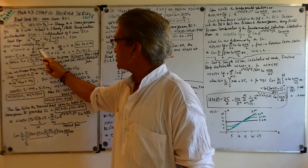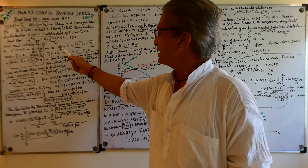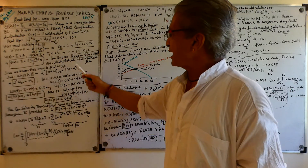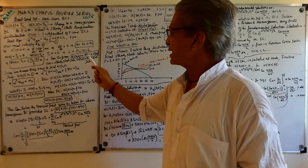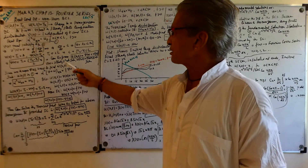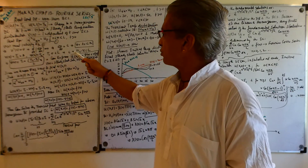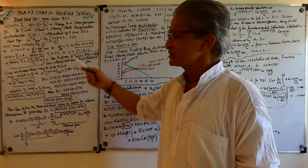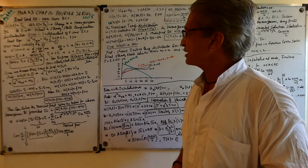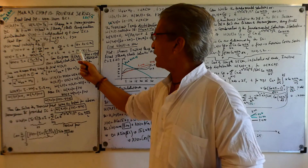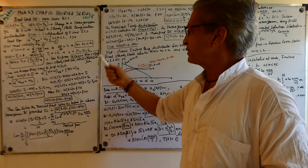So d/dx of dV/dx equals zero, which means dV/dx is a constant. We can write dV = c dx, integrate both sides, and get V = a + cx — a linear profile. That makes sense because you're maintaining the two ends at constant temperatures.